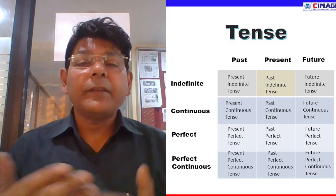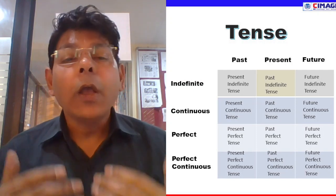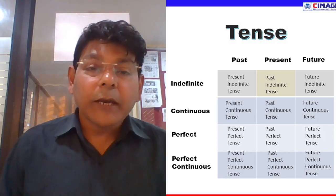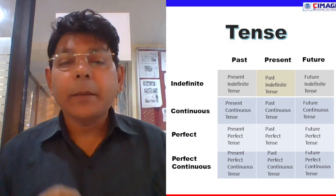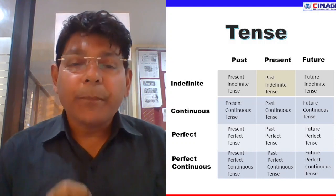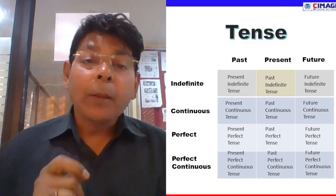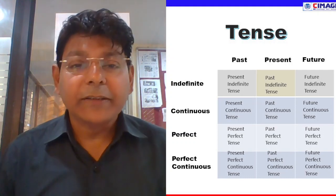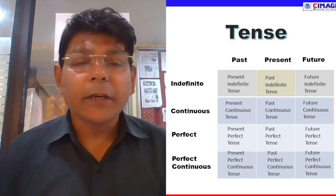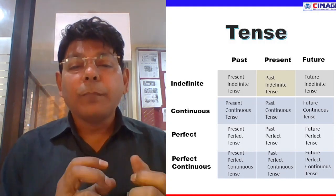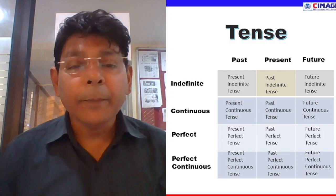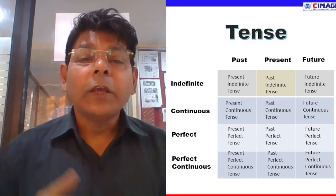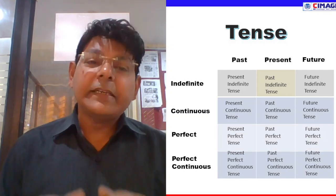Continuous category में — present में जो होती है उसे present continuous tense, past में past continuous tense, और future में future continuous tense कहते हैं. Perfect tense की category में — present में काम हो चुका हो तो present perfect tense, past में हो चुका था तो past perfect tense, और future में हो चुका होगा तो future perfect tense. अगली category perfect continuous tense की आती है जो perfect और continuous दोनों के combination से बनती है — present perfect continuous, past perfect continuous, और future perfect continuous.